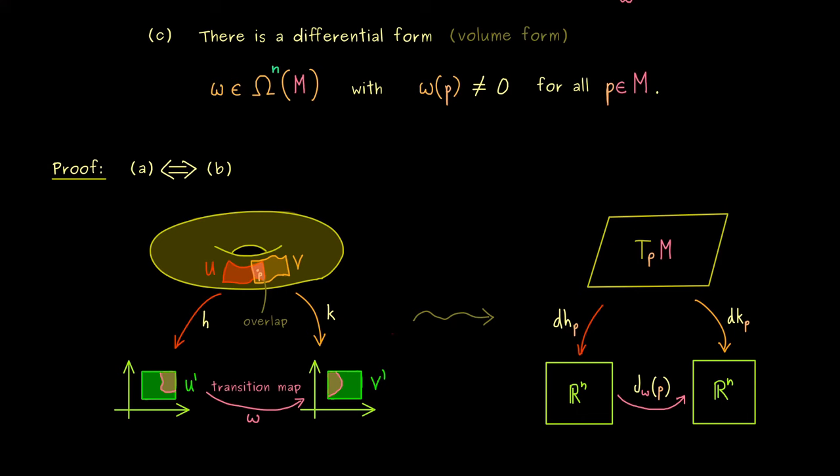You know, usually we would write p tilde, where p tilde is the image of p under the chart h. However, in order to keep the notation clear and simple, let's omit the tilde in the following. Okay, and now it's important to know, what differentials dh and dk actually mean. And it's helpful to consider parameterizations again. So let's say, here on the left hand side, the inverses are given by phi and psi.